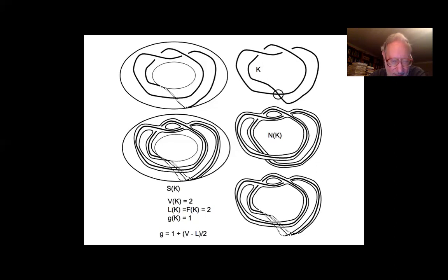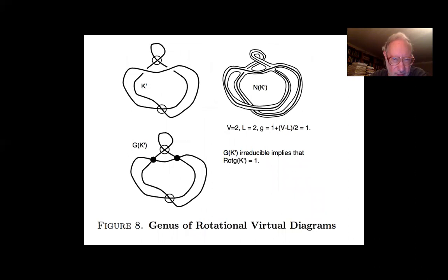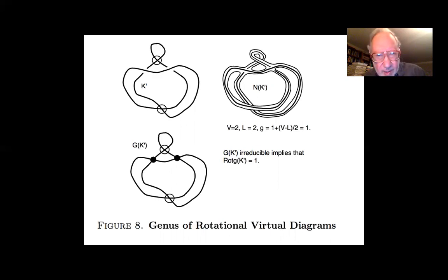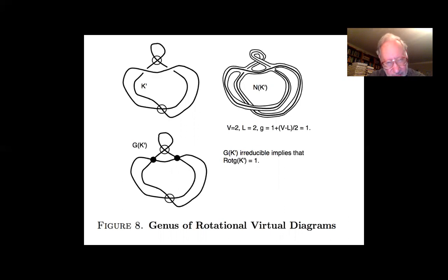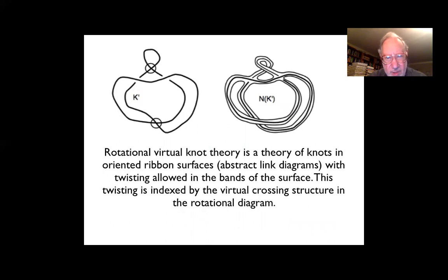When you take rotational, you see what happens to the abstract surfaces. Here is the rotational knot K-prime, and if you form its neighborhood you see that the ribbon has a little curl in it. If you take that curl seriously — not removing it on the abstract surface — you get an equivalence relation on abstract surfaces equivalent to our equivalence relation on rotational virtual knots. The rotational virtual knot theory is thus a theory of knots in oriented ribbon surfaces with twisting allowed in the bands, indexed by the virtual crossing structure.